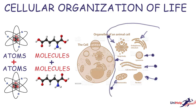All these organelles come together, performing their very unique and important functions, to form the cell — the basic unit of structure and function, the basic unit of life. There is no life apart from the life of the cell. All organisms are made up of one or more cells. All cells arise from pre-existing cells.